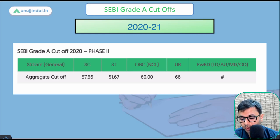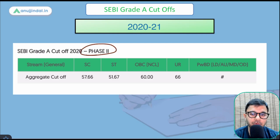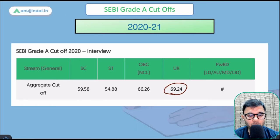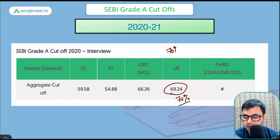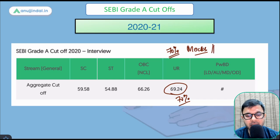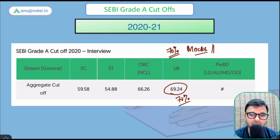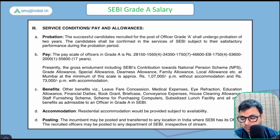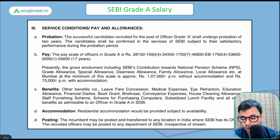Coming to the cutoffs: in the 2020 examination (held in 2021), the Phase 2 cutoff for the unreserved category was 66 percent, and the final cutoff was 69.24 — almost 70 percent. So to be safe, target 70 to 80 percent when giving mocks, taking sectional tests, or chapter-wise tests. The cutoff may vary in future examinations, but 70 to 80 percent is a safe target score.